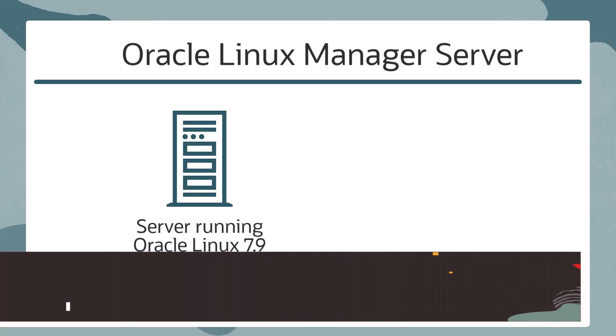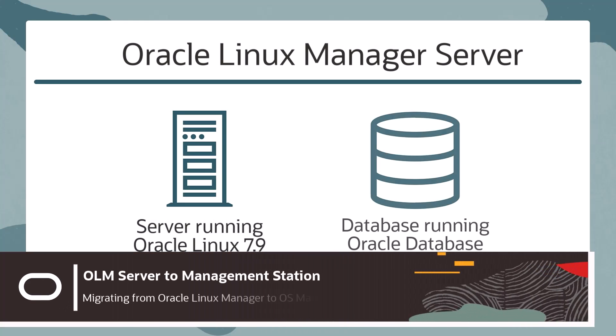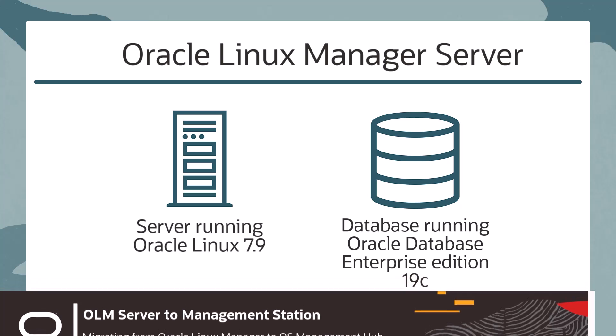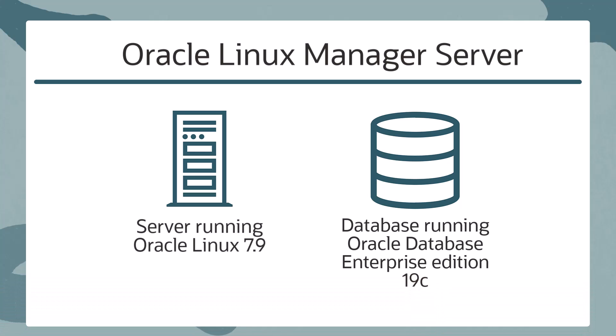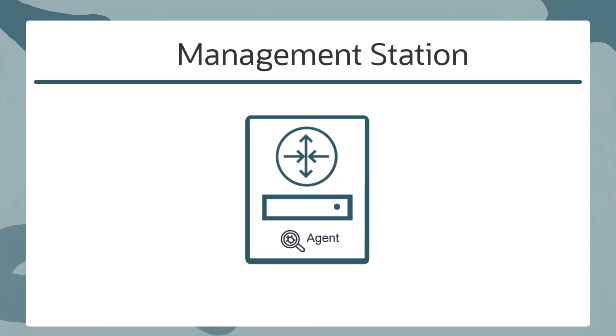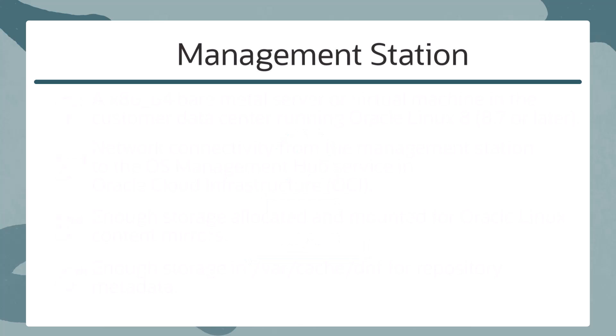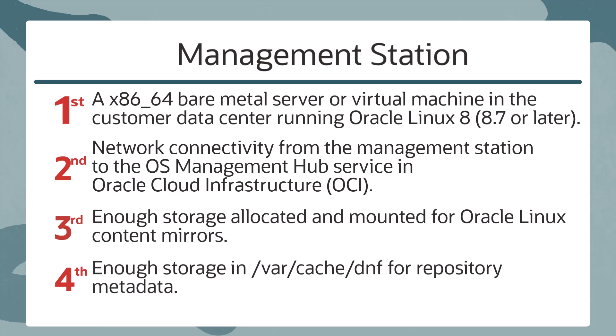Oracle Linux Manager uses a server running Oracle Linux 7.9 to administer and act as proxy for a private data center. Additionally, a database running Oracle Database Enterprise Edition 19c is needed to act as the mirror and store software content. OS Management Hub combines these two resources into one server called a management station. Management stations require a bare metal server or VM running Oracle Linux 8.7 or later inside the private data center that houses the managed systems.